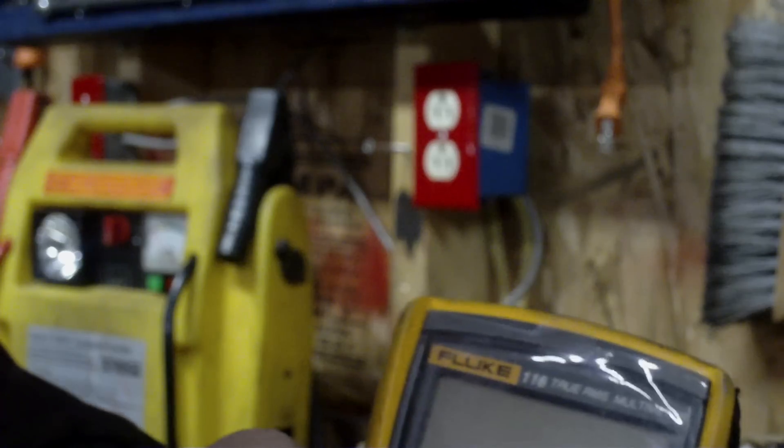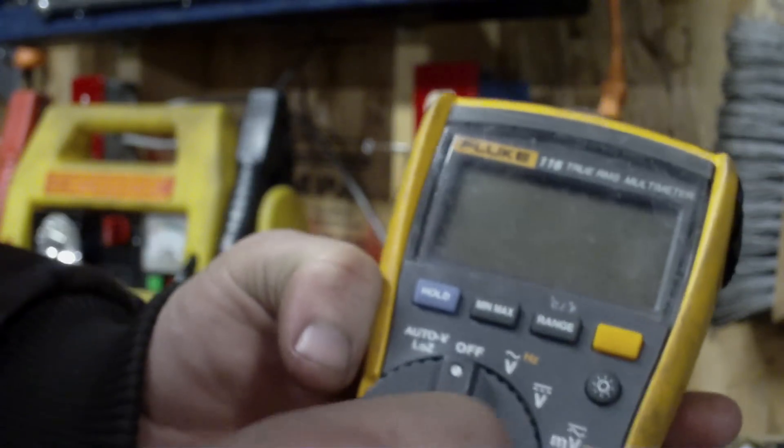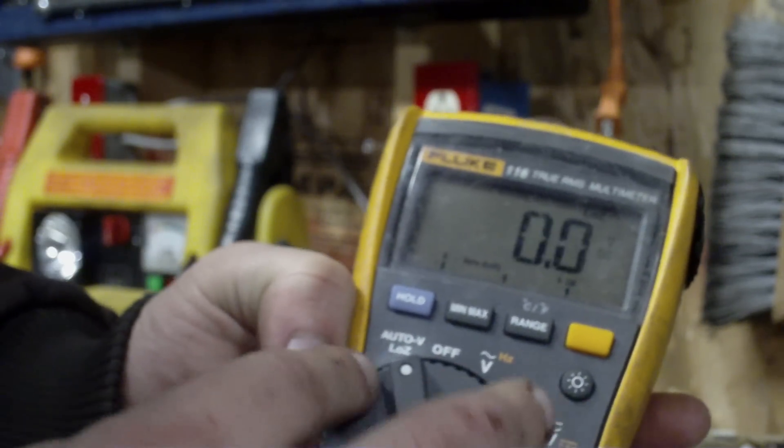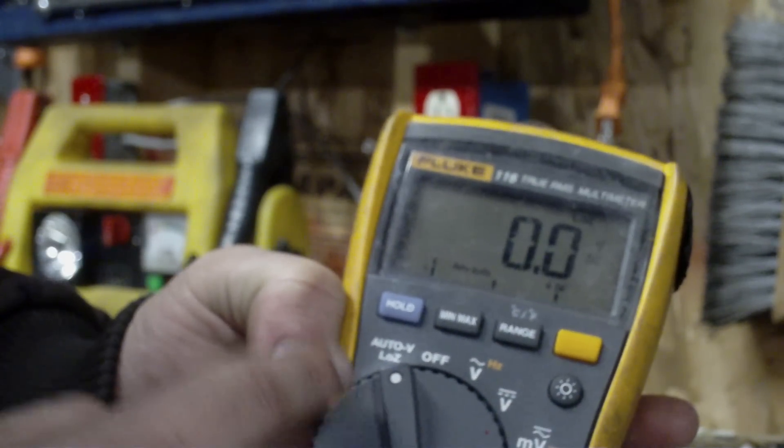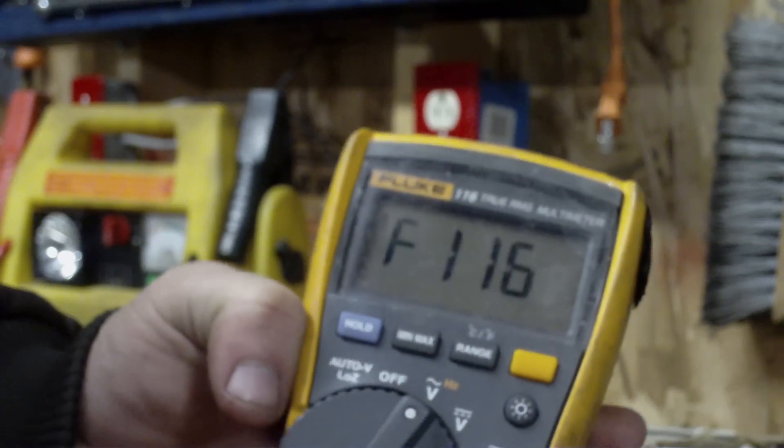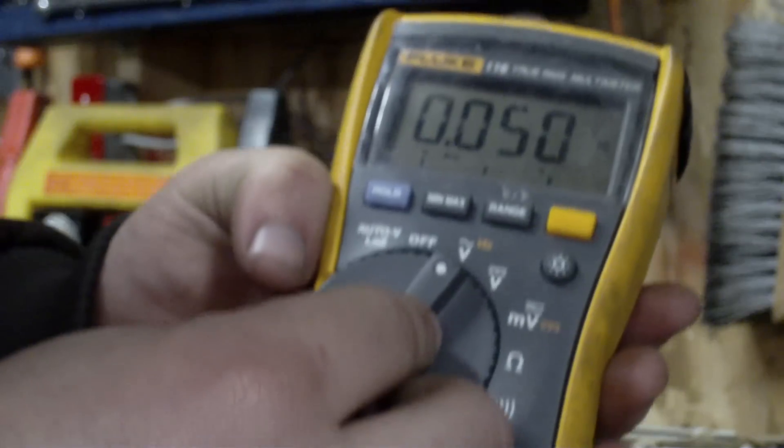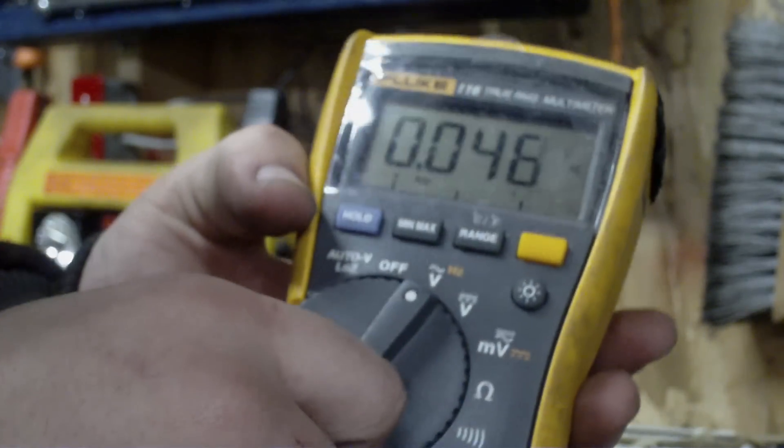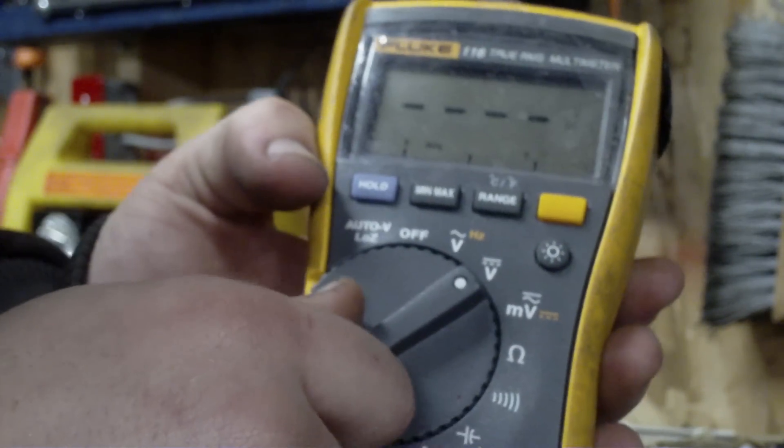This is my main voltmeter I use. It's a Fluke 116. I don't know how well you can see this, but right now it's off. This is auto volts. You put it on here, it'll read AC or DC. Over here it's AC only.